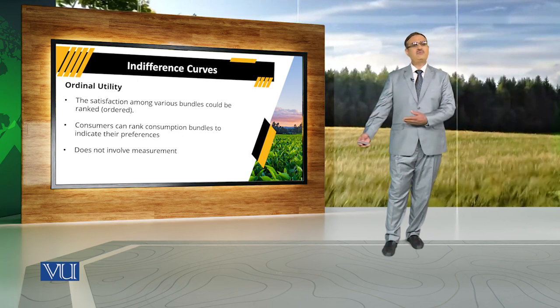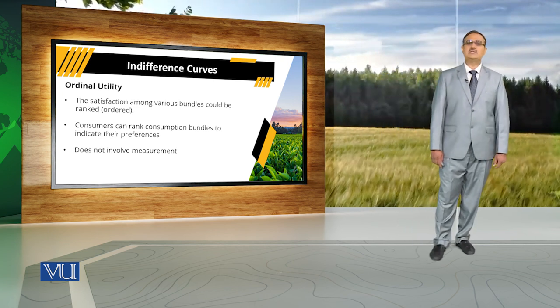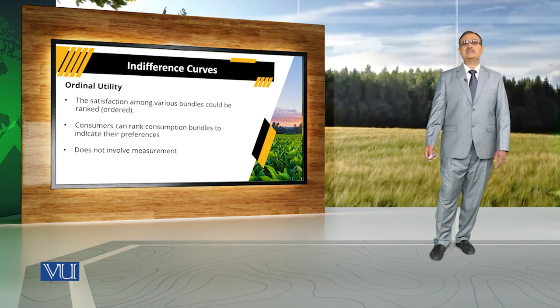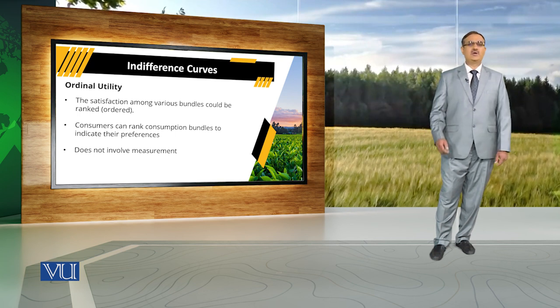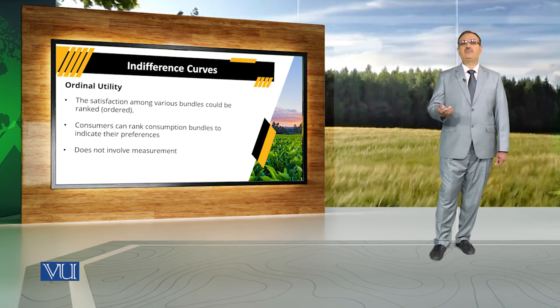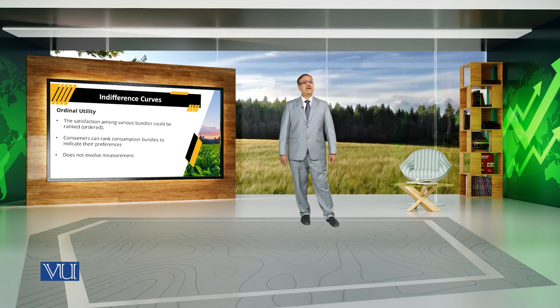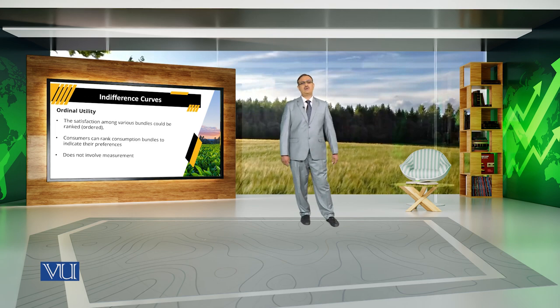For example, considering apples and oranges: the consumer uses apples and oranges to get satisfaction. Against different combinations of apples and oranges, they will get a certain level of satisfaction. But we are in a position only to rank those different consumption bundles — we are not in a position to say someone is getting 25 utils against one combination and 50 utils against another. We can only say the consumer is getting more satisfaction from one particular combination compared to another.